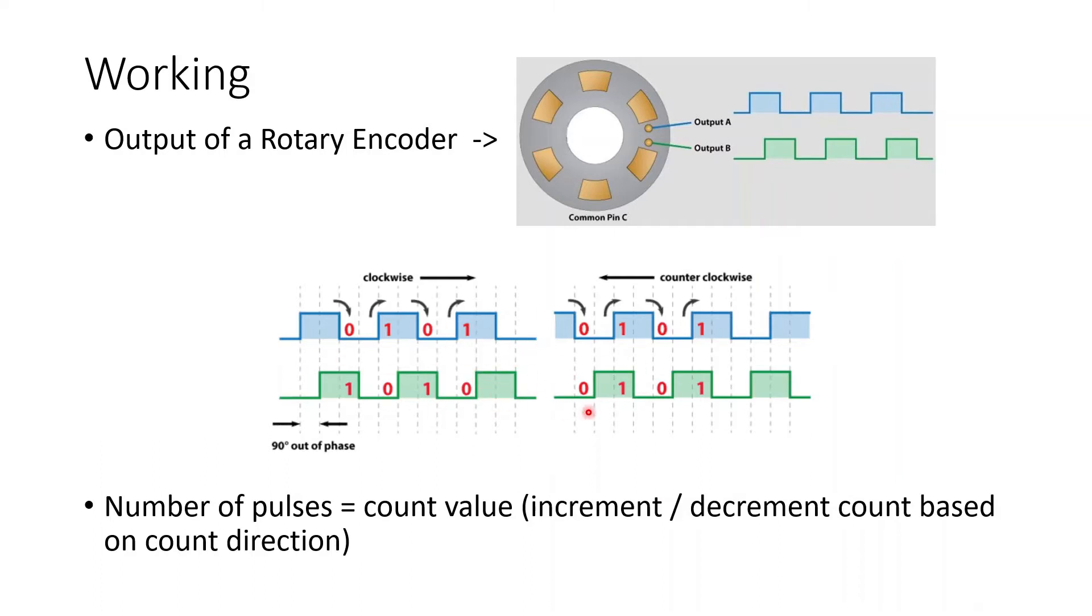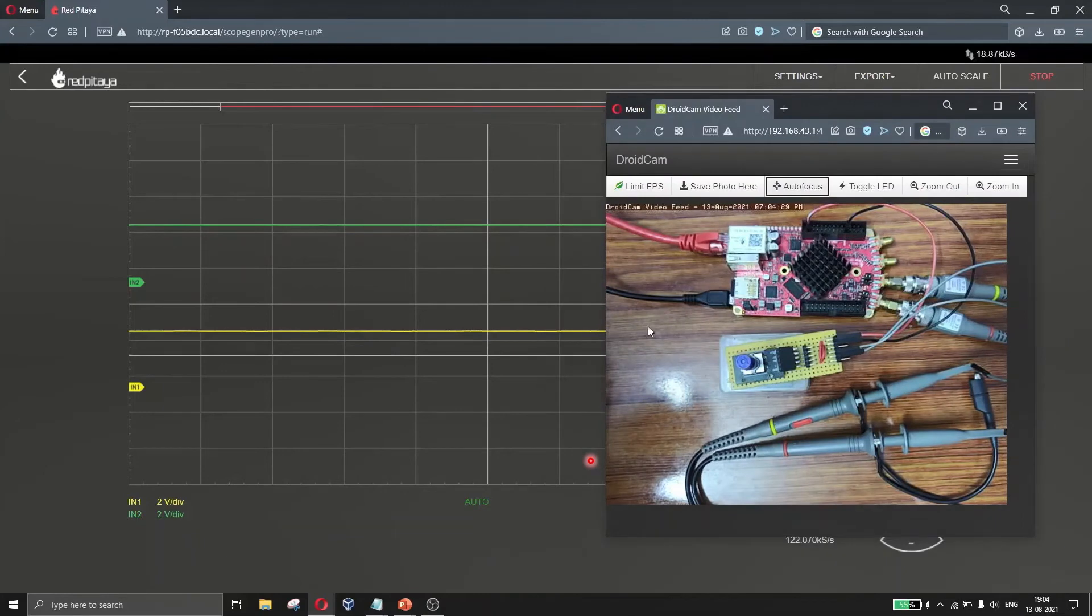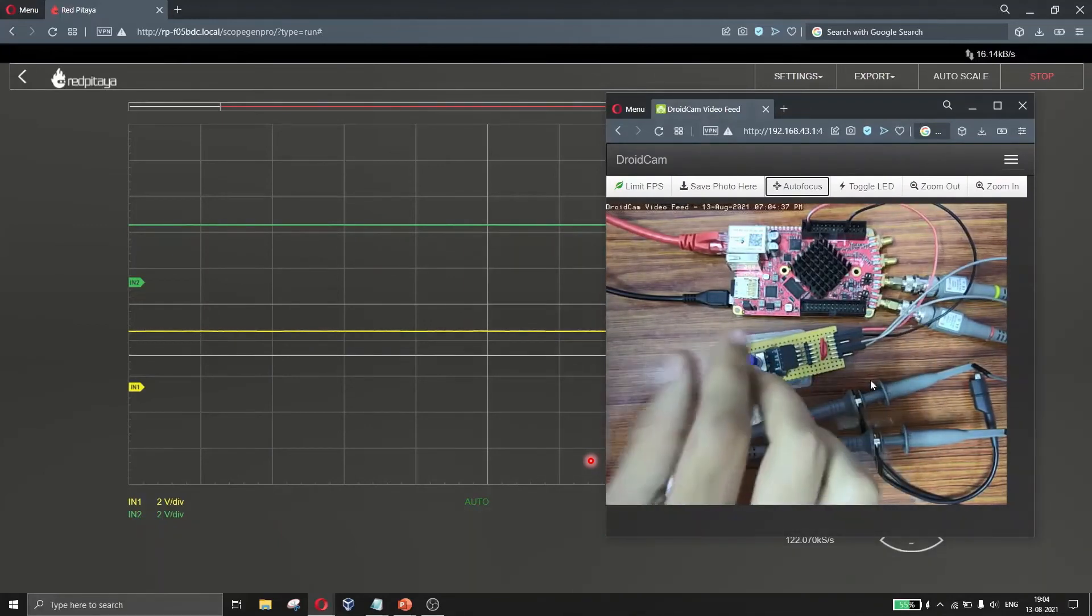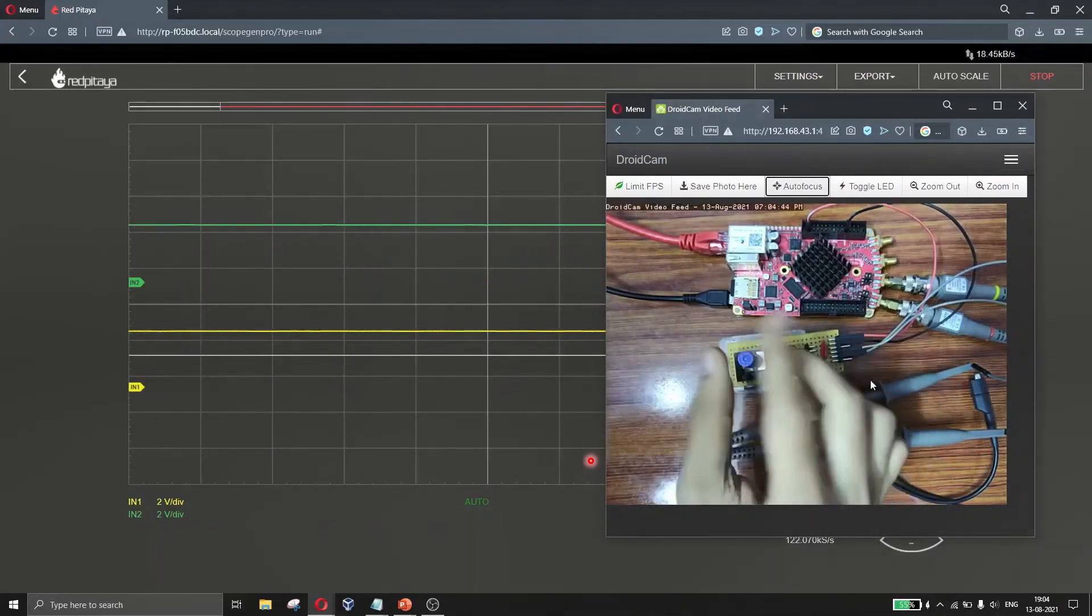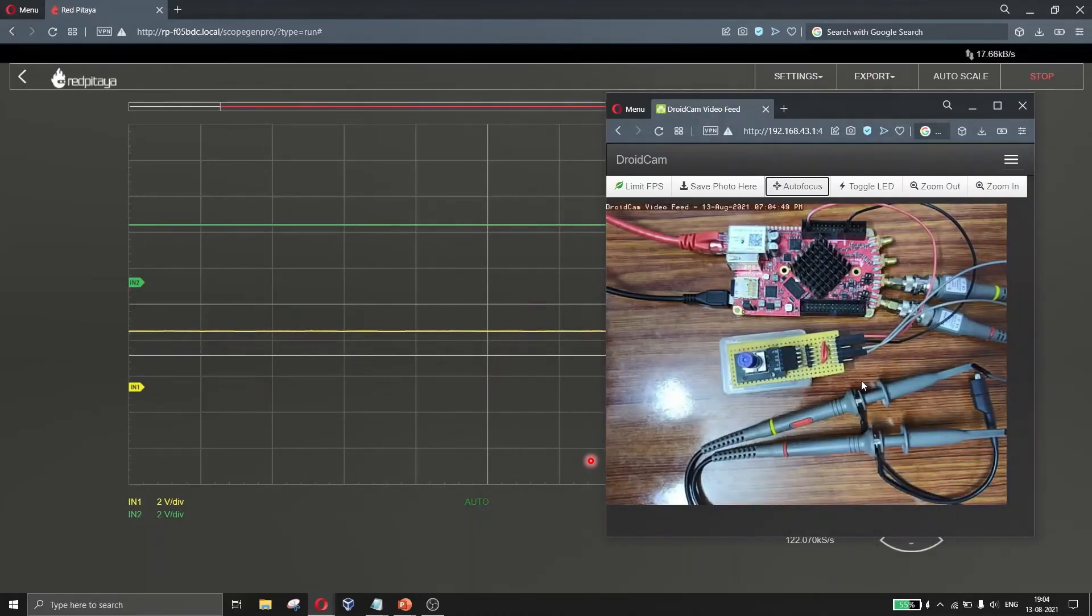So in the next slide, we will see how we can check the working of the rotary encoder using a simple oscilloscope. As you can see here, I am using the red pitaya as the oscilloscope. I have connected the two probes to the rotary encoder's output. Now you will see that as I rotate the rotary encoder, rotate the rotary encoder meaning some signals here. Now let us see the captured signals and analyze them.